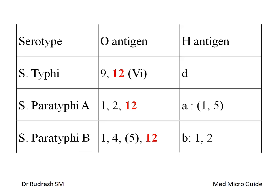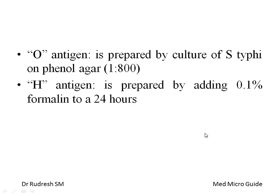In the Widal test, we use only one O antigen and detect the H antigens of typhi, paratyphi A, and B. We use only one O antigen because factor 12 of the O antigen is shared by all three species — typhi, paratyphi A, and B. O antigens are prepared by culture of Salmonella typhi on phenol agar, and H antigens are prepared by adding 0.1 percent formalin to a 24-hour growth culture of the respective species.